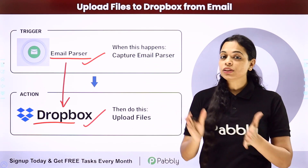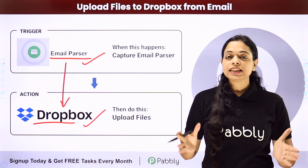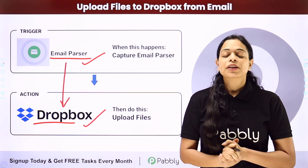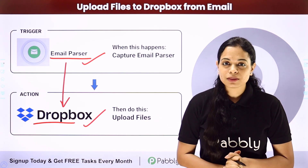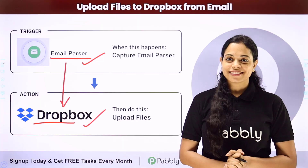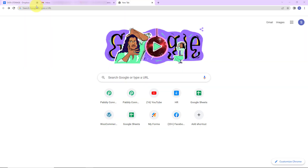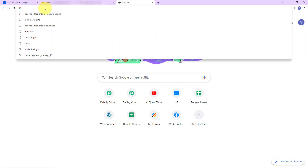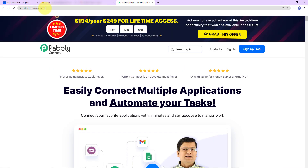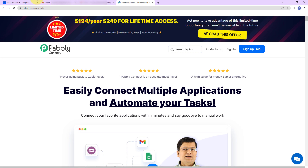How can you do this yourself — integrate and automate this entire process? To understand that, let me take you to my screen. We are first going to type the URL pabbly.com/connect, and here we have reached the landing page.